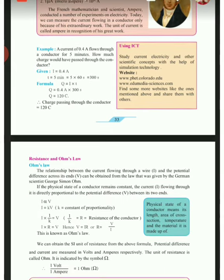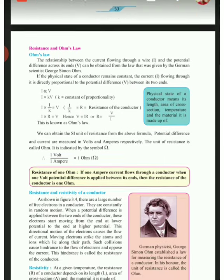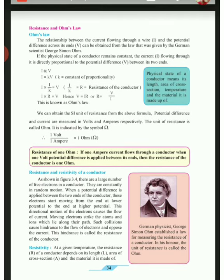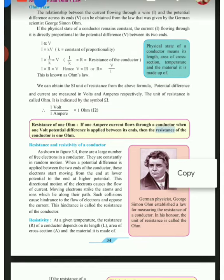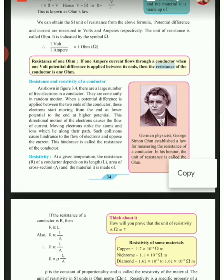Then we learnt about Ohm's law. The statement of Ohm's law says that if the physical state of a conductor remains constant, the current flowing through it is directly proportional to the potential difference between them. We also studied how 1 volt upon 1 ampere is equal to 1 ohm.